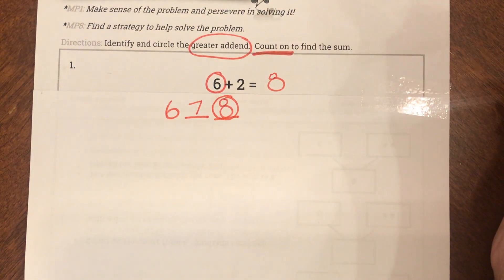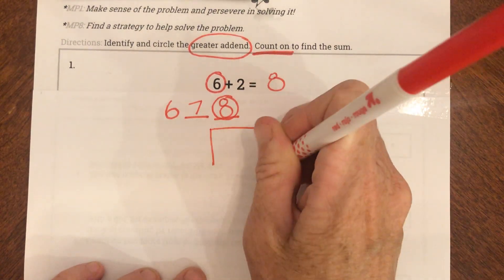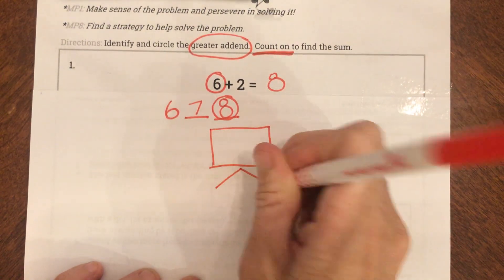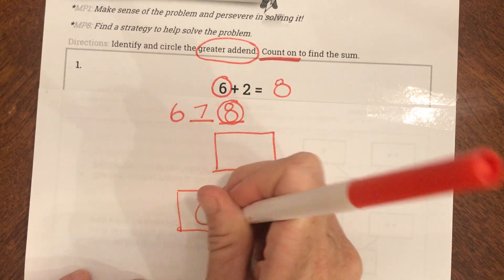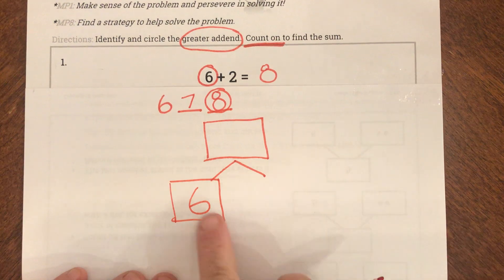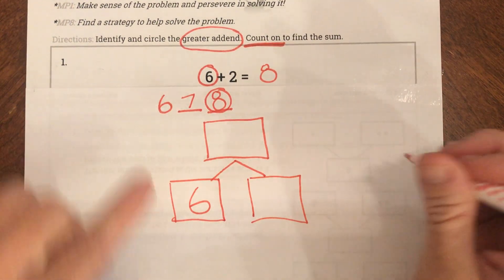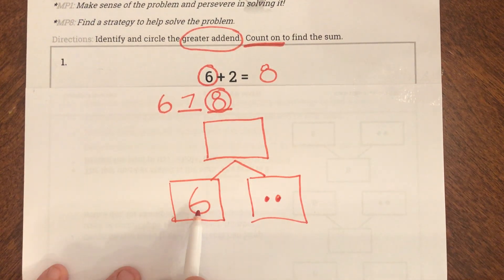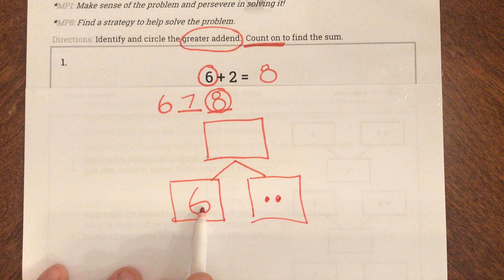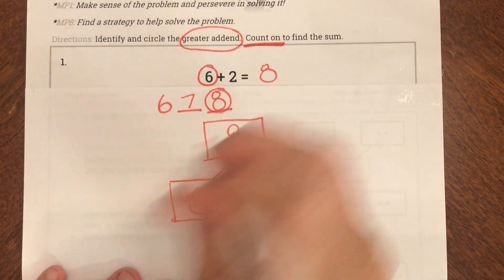Now I'm also going to show you this with a number bond. So here is my whole number. And I know I started with a 6. I started with a 6. And they want me to count on 2 more. They want me to add 2 more. So if I have 6 and I go 6, 7, 8.